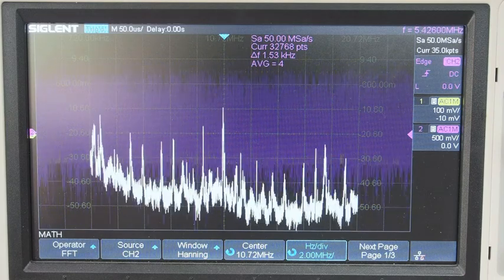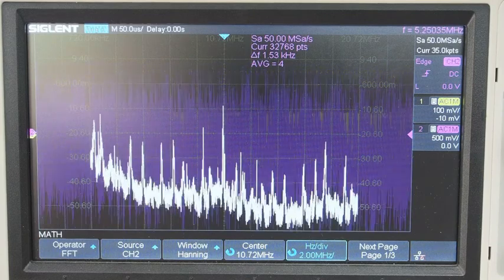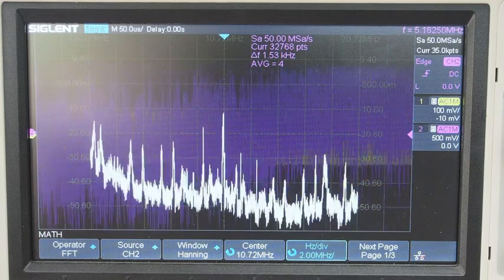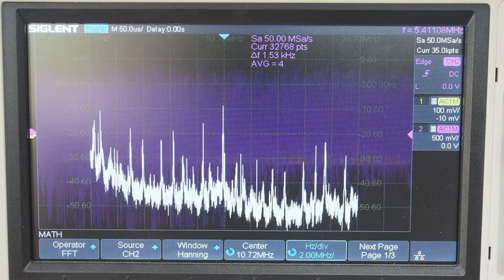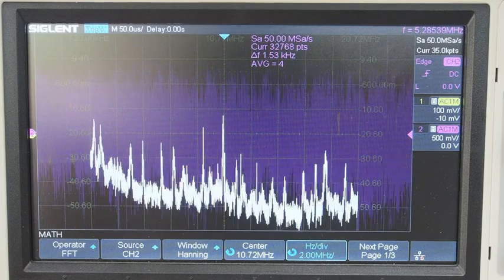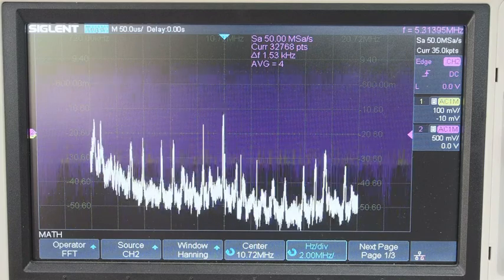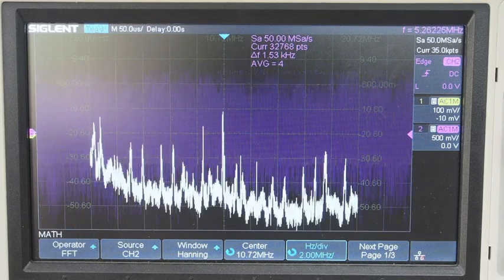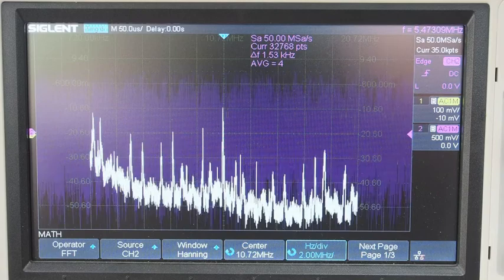So maybe some output filtering on the IF amplifier or making it more selective to clean up this signal. Or by placing a limiter, tuned limiter between the IF amplifier and the FM discriminator may clean up this signal somewhat.